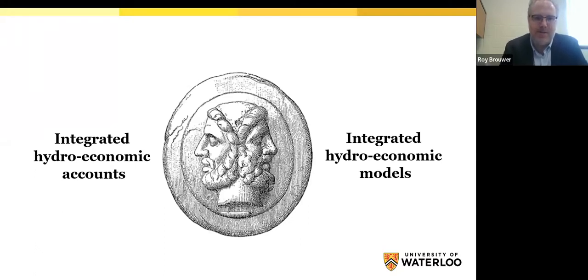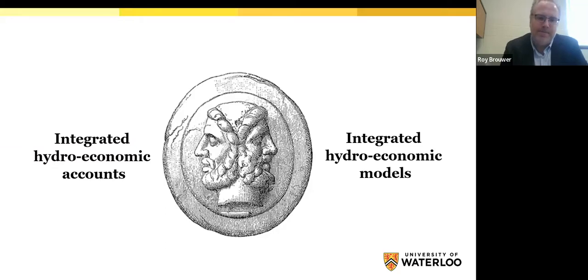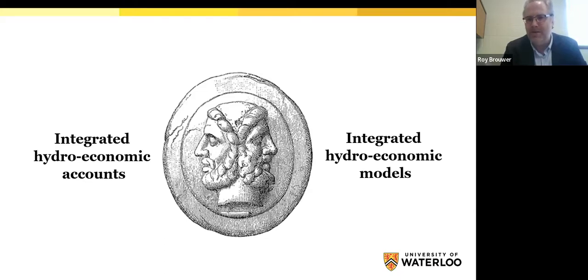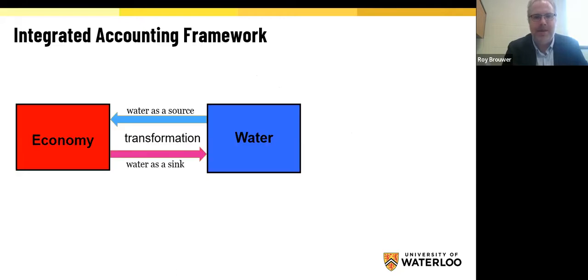For those of you who've seen me present in this webinar series before, you probably recognize this coin. It's the Roman god Janus, who is two-faced — he can look backwards and forwards — and this illustrates the work we're doing under the heading of hydro-economics. In order to develop integrated hydro-economic models, we also need the data to validate and calibrate these models. The work consists of an accounting component where we look back based on available data about the interaction of economic activities with the water system.